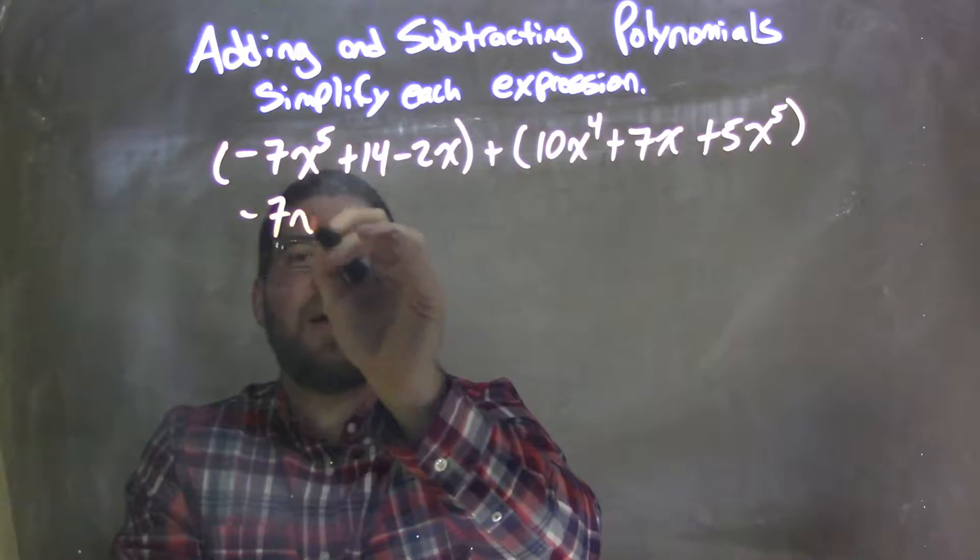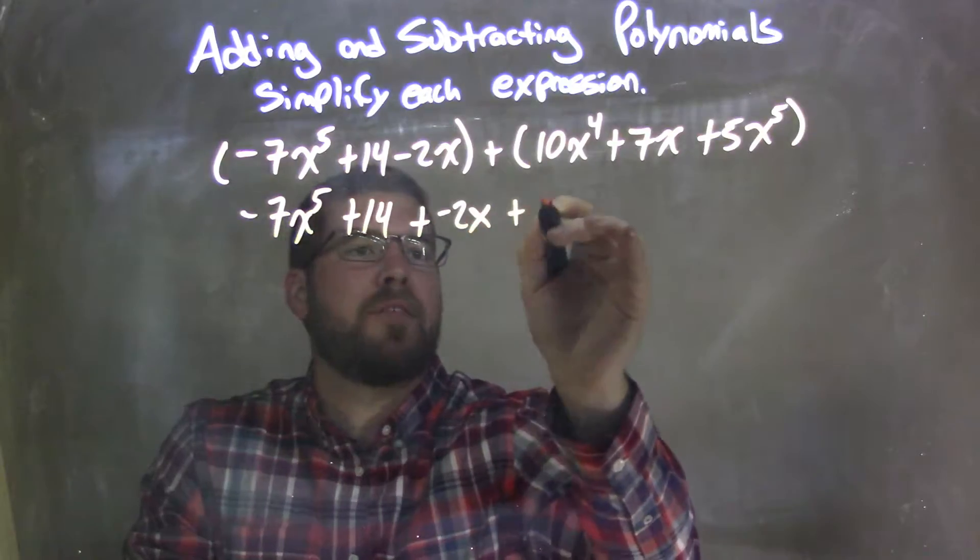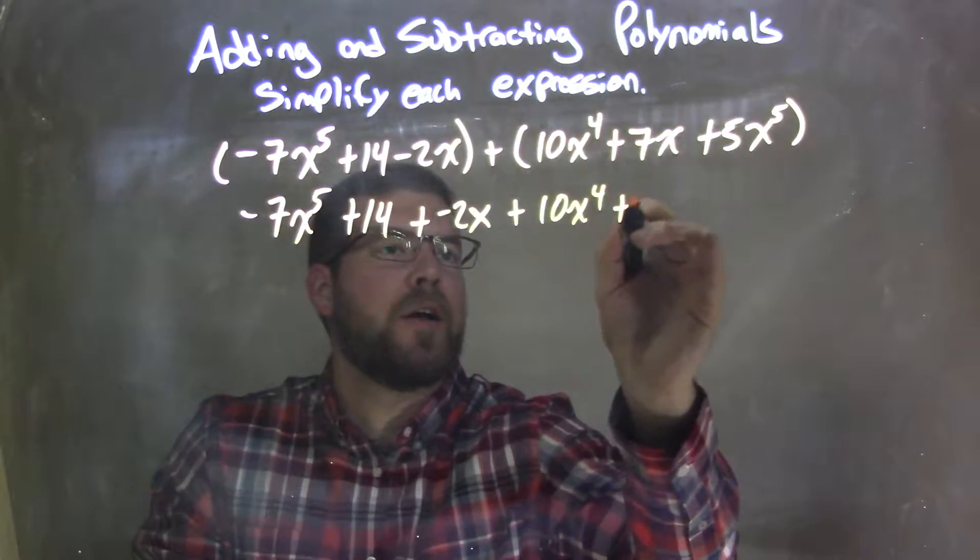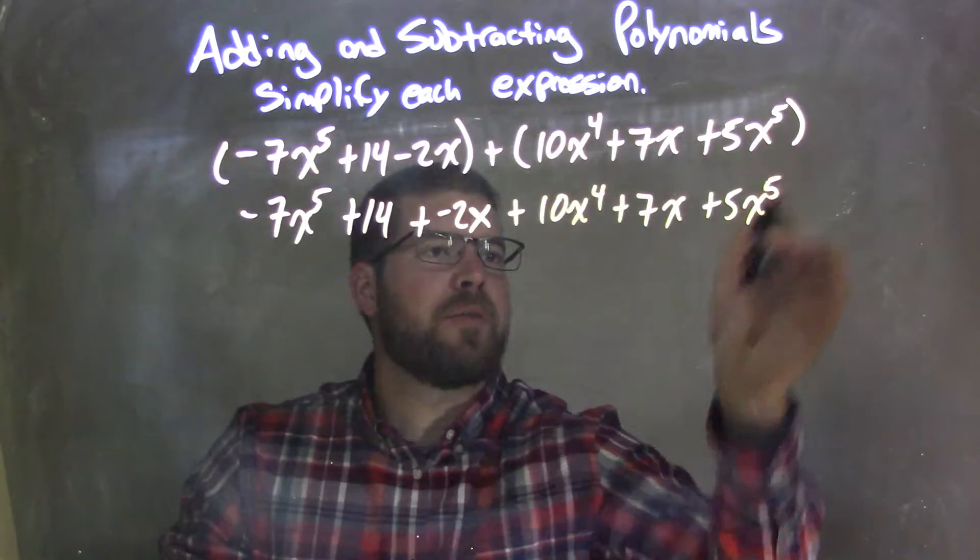So I have -7x^5 + 14 + (-2x) + 10x^4 + 7x + 5x^5.